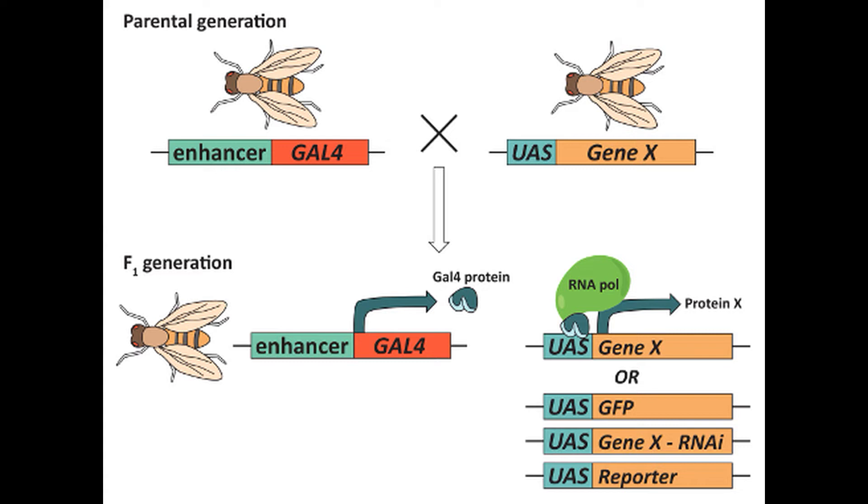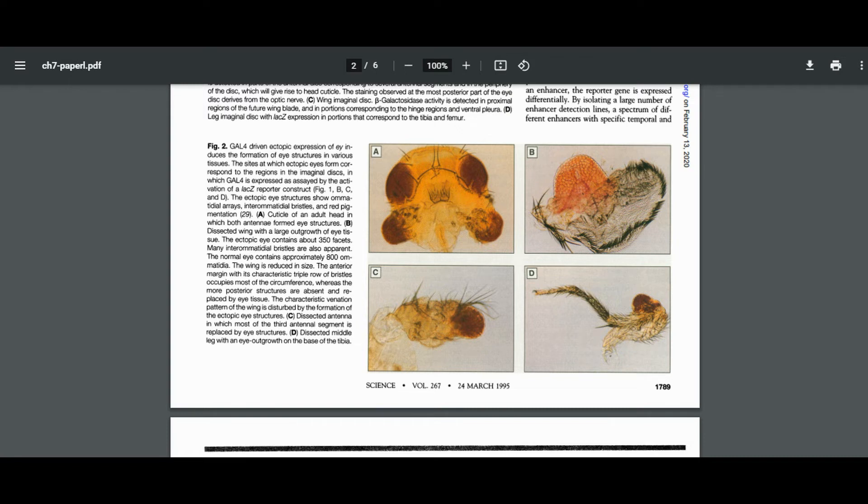So, the researchers attached Eyeless to that upstream activating sequence with the GAL4 specific binding sites and bred flies that had this whole gene complex in their genome. The researchers also bred independent lines of flies possessing the GAL4 enhancer, and then they crossed the two lines of flies. So, whenever GAL4 happened to land near a GAL4 enhancer, GAL4 was transcribed, and that caused the target gene, Eyeless, to be transcribed in turn. Of the 20 lines the researchers created, only three produced viable adult flies. These flies had ectopic eyes on the wings, legs, antennae, and haltiers. In fact, 100% of the flies produced ectopic eyes.